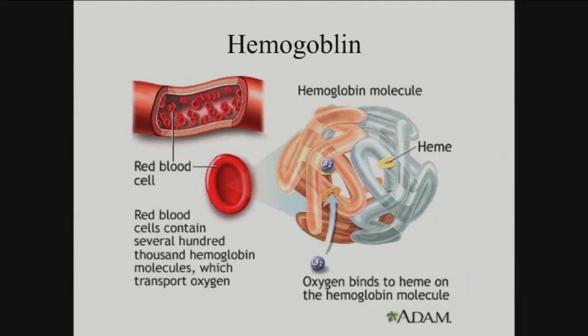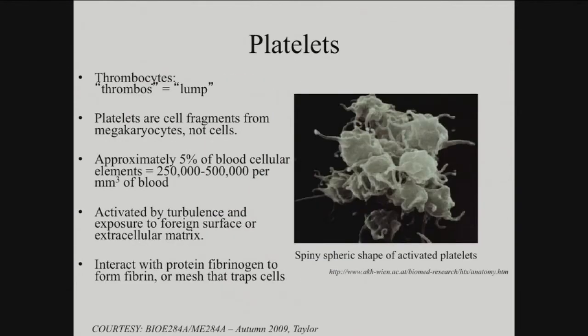Besides red blood cells, you have platelets, also known as thrombocytes. These are fragments of a large cell type called a megakaryocyte, which is a precursor to platelets — big cells that break off into fragments that become your platelets. There's a lower concentration of them in the blood than red blood cells, but they make up a significant proportion. These are your clotting factors; they bind to the protein fibrinogen and form the clots when you have bleeding in your blood vessels.